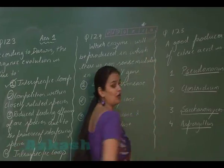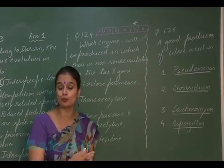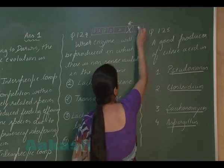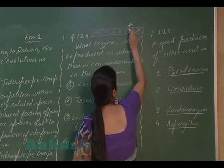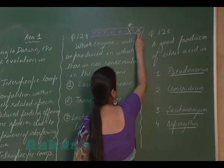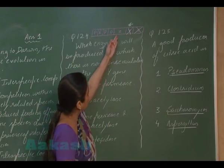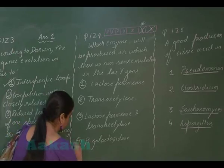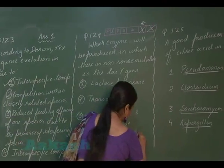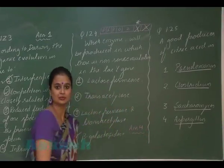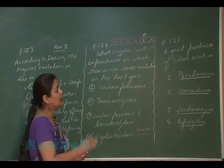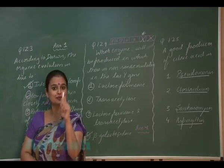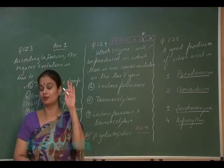Since the mutation is a nonsense mutation in the Y gene, a stop codon is formed. This means Y gene will not form permease, and because transcription is sequential, A gene will also not form transacetylase. The only enzyme formed is by the Z gene — beta-galactosidase. So the right answer is option 4: only beta-galactosidase is produced, since Y and A genes will not be transcribed or translated due to the nonsense (stop) codon.